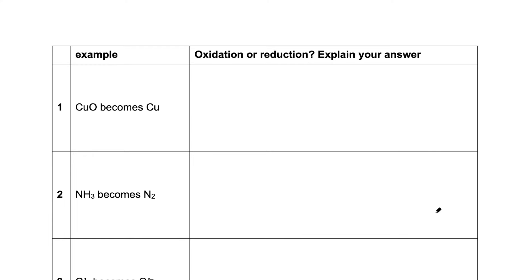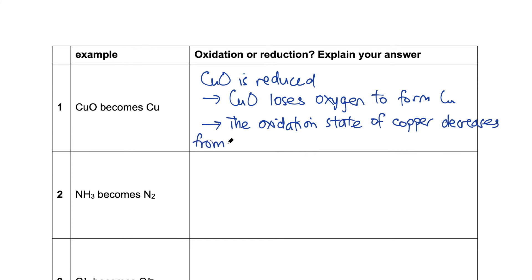In the first one, CuO becomes Cu. CuO is being reduced. There are two ways we can look at this. Firstly, we can say that CuO loses oxygen to form Cu, therefore it's reduced. The second way we can look at it is using oxidation state. The oxidation state of copper decreases from plus two in CuO to zero in Cu.